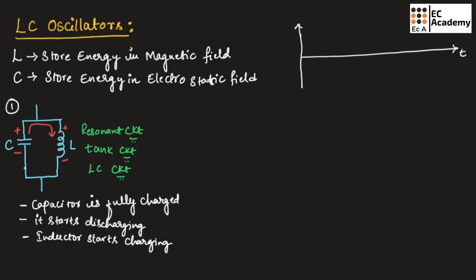This can be shown in the waveform. Initially the capacitor starts charging, then once fully charged it starts discharging. In this first step, the inductor creates a magnetic field — the energy in the inductor increases and the energy across the capacitor decreases.